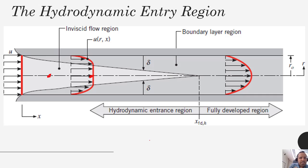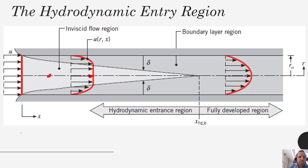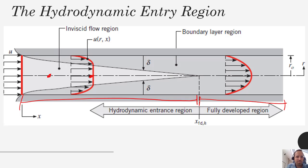The heat transfer characteristics are going to be different in different regions. Right at the beginning of your pipe or channel, boundary layers are forming — this is called the hydrodynamic entrance region. Heat transfer characteristics in this developing entrance region are certainly different from those in the fully developed region. In the fully developed region, those boundary layers have converged and the velocity profile becomes essentially unchanged.